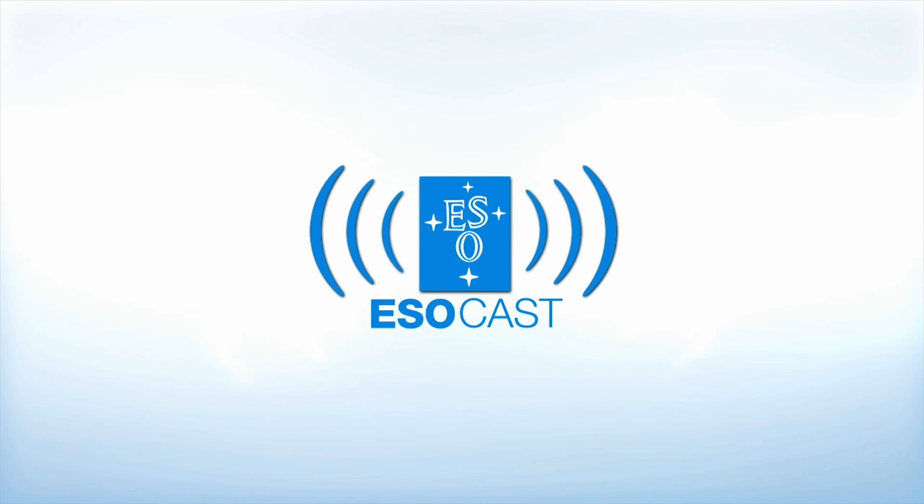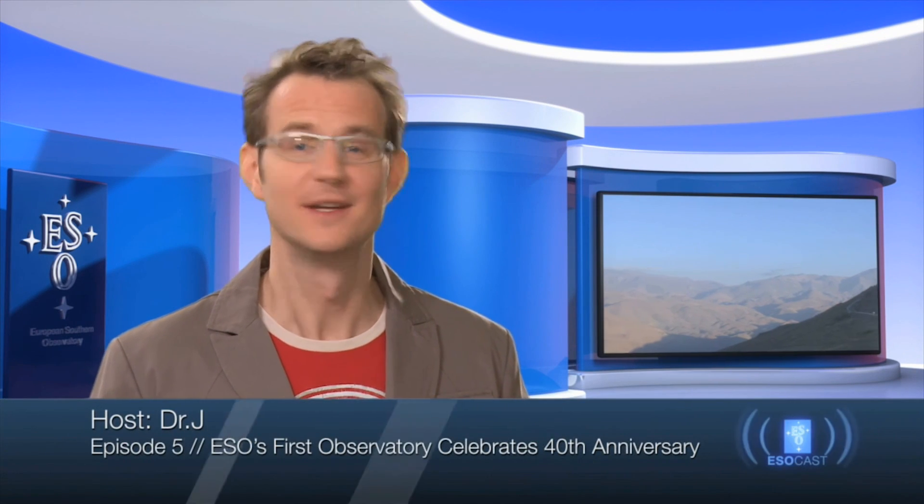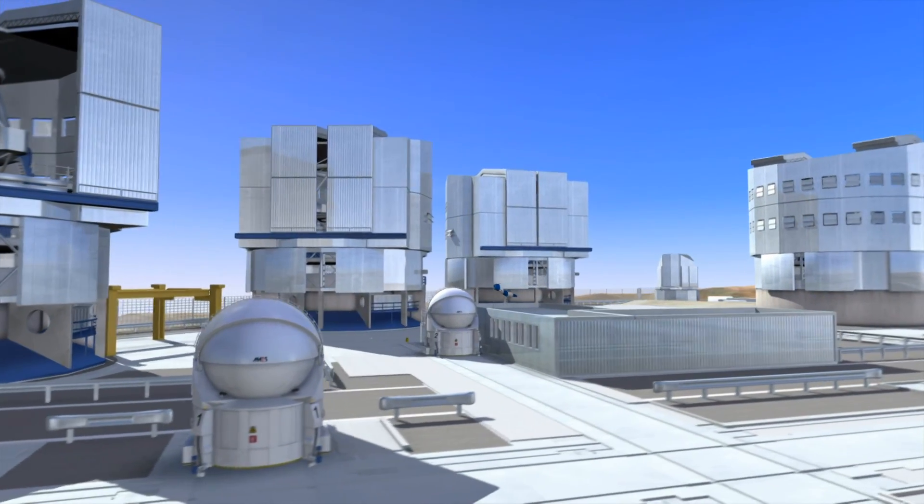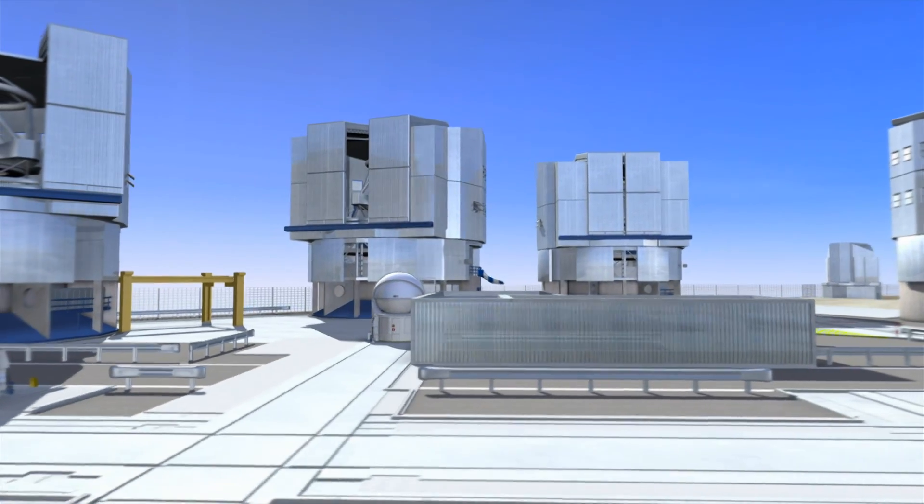Now that you've caught up with Hubble, make sure to get the latest from the ground too. The ESOcast highlights the best of the European Southern Observatory and its powerful telescopes that observe from high in the Chilean Andes, at the Southern Hemisphere's best known sites for astronomical observations.